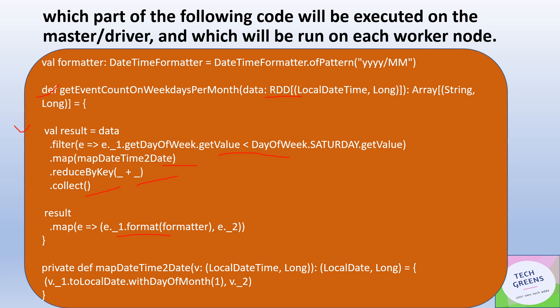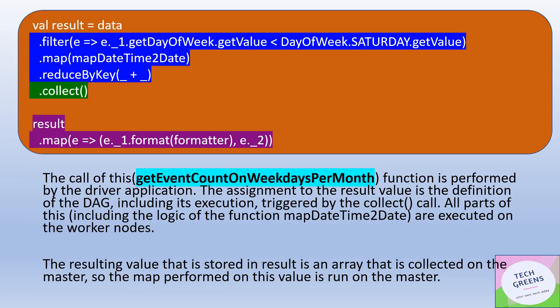After `collect` is applied, a `map` operation is called on the result. In this map operation, we are trying to format the date received based on a formatter that was initiated. This piece of code has many transformations and one action, and the question is which part of this function would be called on the driver node and which on the worker node.